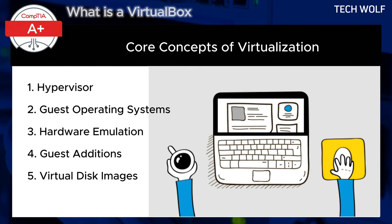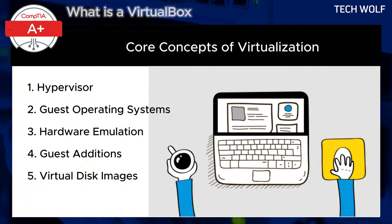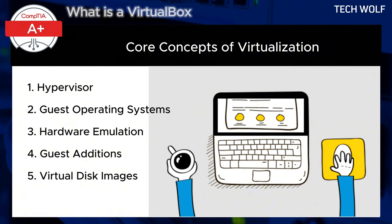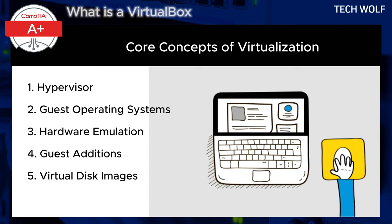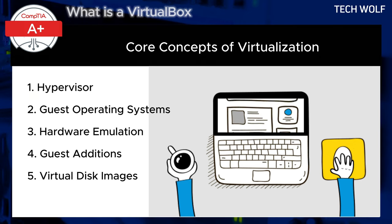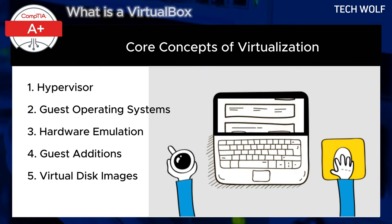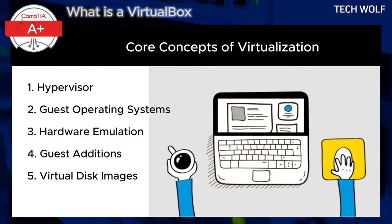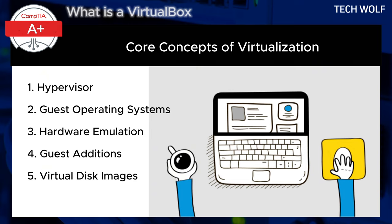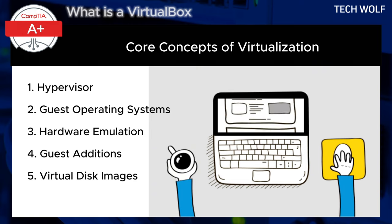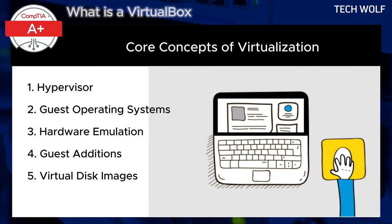Virtual disk images: Virtual machines need a storage location for the guest operating system and data. VirtualBox supports various virtual disk formats like VDI (VirtualBox Disk Image), VMDK (VMware Disk), and VHD (Microsoft Virtual Hard Disk), among others.